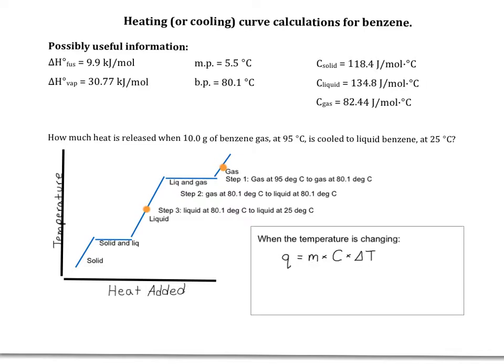M can actually be mass or moles, depending on the units of specific heat. When the temperature is not changing, we'll use the moles or mass of the substance times the delta H of fusion or the delta H of vaporization, depending on which phase change it's undergoing.